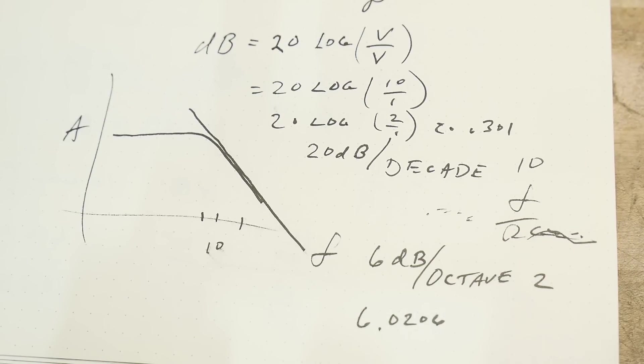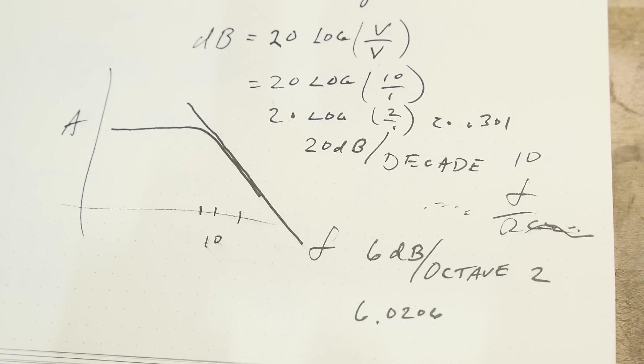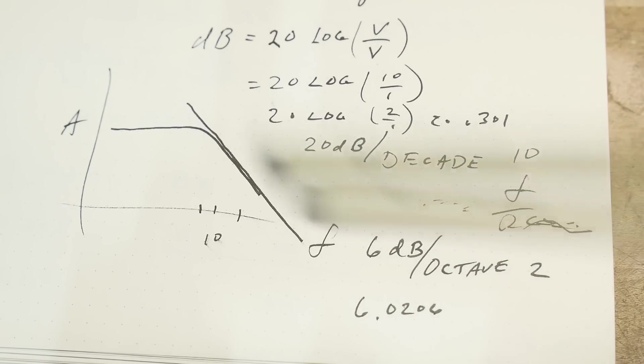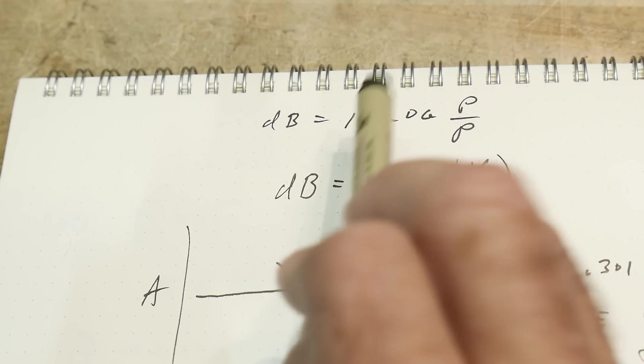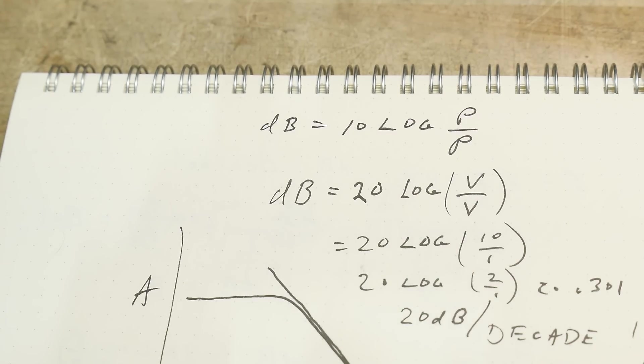There you go, a little bit about logarithms and stuff. If you don't like math, then skip this one. That's where 20 dB per decade comes from and 6 dB per octave comes from, and the difference between 10 log with powers and 20 log with volts.